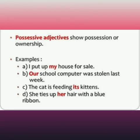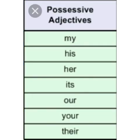Possessive adjectives show possession or ownership. For example: I put my house for sale. Our school computer was stolen last week. The cat is feeding its kitten. She ties up her hair with a blue ribbon. Here, my, our, its, and her indicate that something belongs to a person or thing. So students, today we have learned adjectives and their kinds.